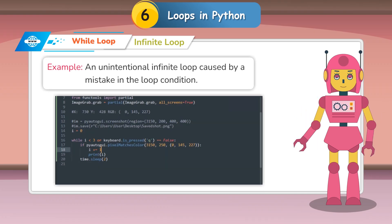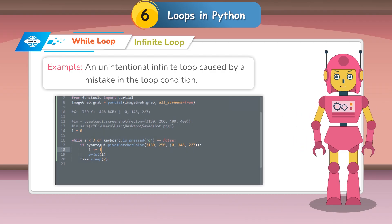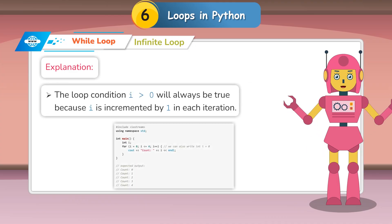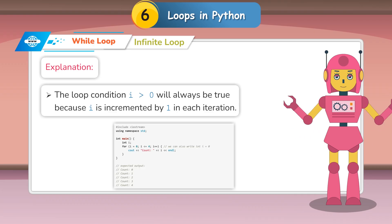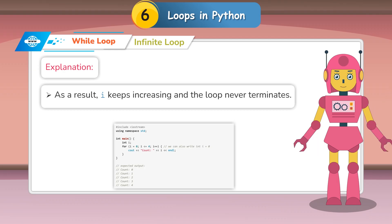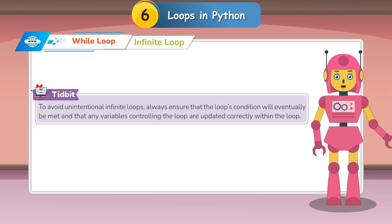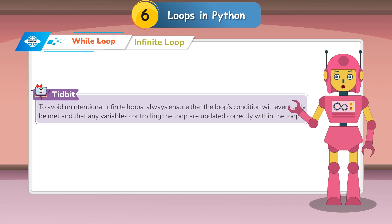Example of an unintentional infinite loop caused by a mistake in the loop condition: the condition will always be true because i is incremented by 1 in each iteration, so i keeps increasing and the loop never terminates. To avoid unintentional infinite loops, always ensure that the loop's condition will eventually be met and that any variables controlling the loop are updated correctly within the loop.